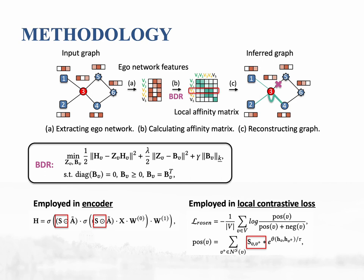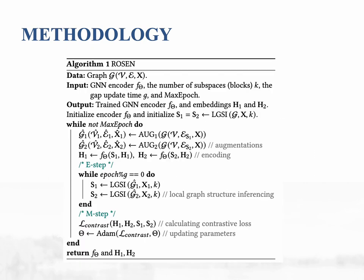Specifically, Rosen equips a local graph structure inference module utilizing the block diagonal property BDP of the affinity matrix extracted from node ego networks. This module can generate the homophilic graph structure by selectively removing disassortative edges.